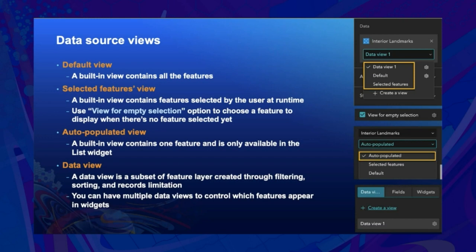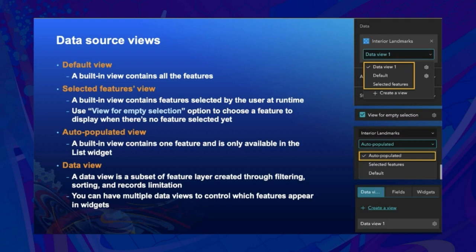A data source like a Feature Layer may have four types of views. Three are built-in and cannot be created: the default view includes all features, the Selected Feature View contains selected features, and the auto-populate view applies to the list widget with one feature. The fourth is Data View — a subset of a data source you can create through filtering, sorting, and limiting data to control which features appear in a widget.